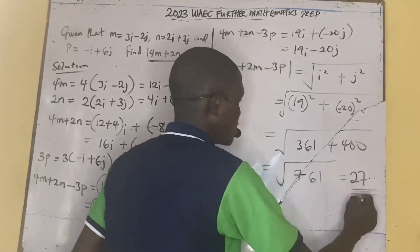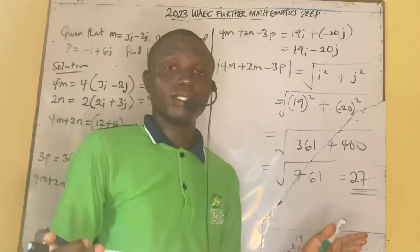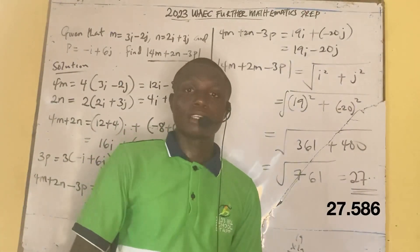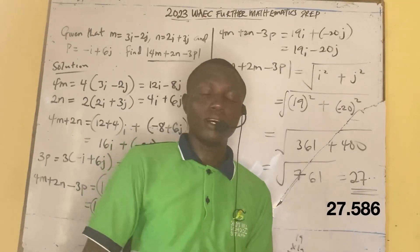761 will give you 27 point something. So you can do a calculation and that's that, 27 point something. So we have come to the end of the class. Please if you want to subscribe please go ahead and subscribe and share the vector and scalar transition channel. Thank you and God bless you.